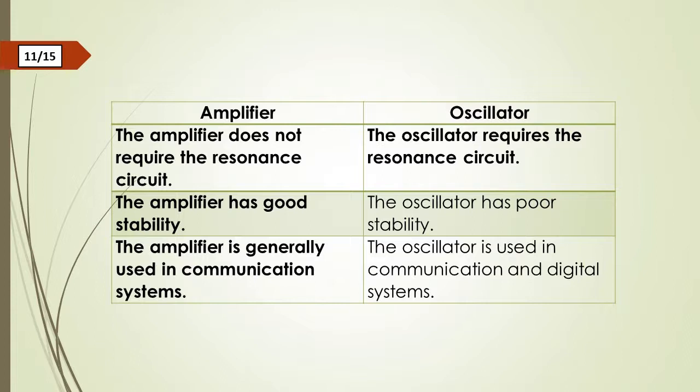The amplifier has good stability. The oscillator has poor stability. The amplifier is generally used in communication systems. The oscillator is used in communication and digital systems.